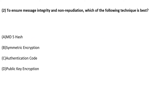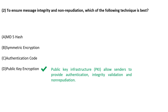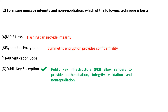To ensure message integrity and non-repudiation, each of the following techniques is best. Please remember: public key infrastructure allows a sender to provide authentication, integrity validation, as well as non-repudiation. All three objectives can be established by use of public key encryption. A hash function will provide integrity. Encryption will provide confidentiality. An authentication code will provide integrity. We have a separate video for hash and digital signatures for more clarification.